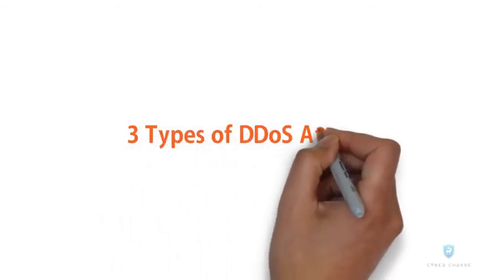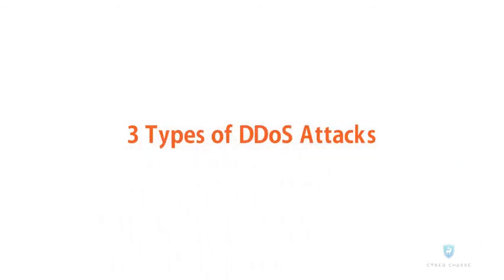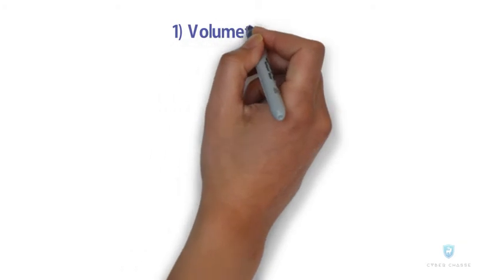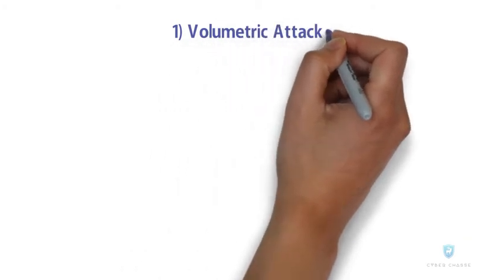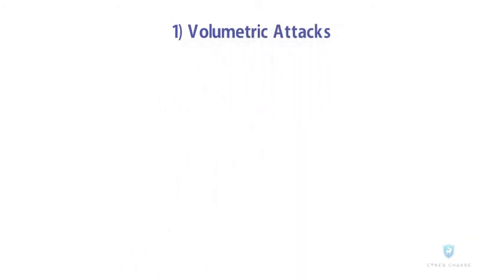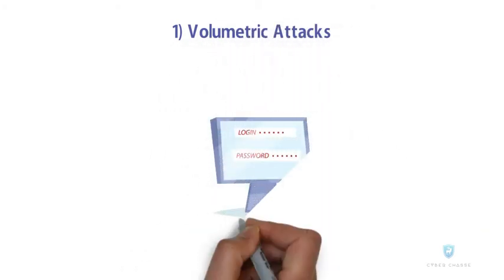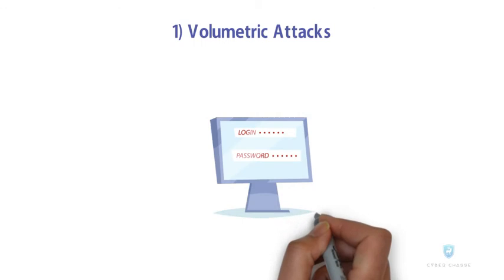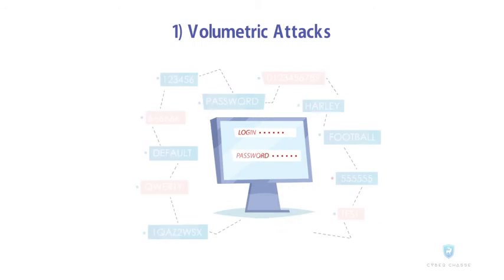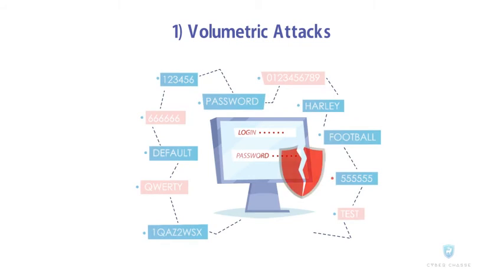Three types of DDoS attacks. First, Volumetric attacks: it overwhelms the bandwidth of the network with a large number of false requests on every open port, preventing legitimate requests from getting through. It's the most common form of DDoS attack.